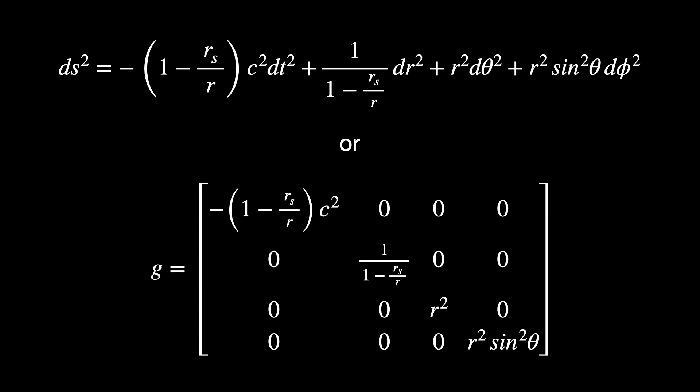The Schwarzschild solution is just one of these possible inputs, the very first one that was discovered. We won't prove that this metric is actually the solution of Einstein field equations because the calculations are really long, but we will analyze and interpret each term.